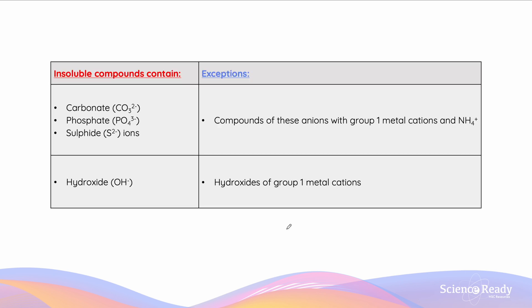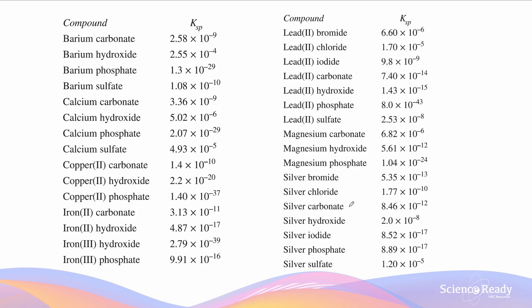The solubility rules also tell us which compounds are mostly insoluble. Carbonate, phosphate and sulfide-containing compounds are mostly insoluble, except for compounds of these anions with group one metal cations or ammonium — remembering that all group one metal cations and ammonium-containing compounds are soluble. Hydroxides are also insoluble except for group one metal hydroxides. The NESA data sheet provides a KSP value for a variety of compounds. KSP is a solubility product that tells us the solubility of the compound — explored in more detail in Module 5 of the HSC chemistry syllabus. As an easy rule, compounds with a small KSP value such as barium phosphate are more insoluble, while those with a higher KSP such as barium hydroxide are sparingly soluble to insoluble in water.